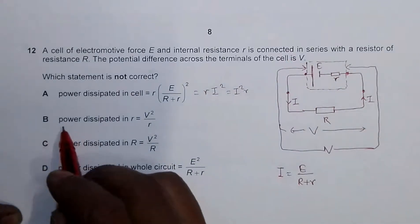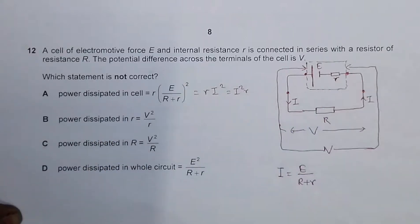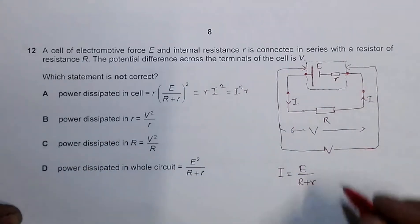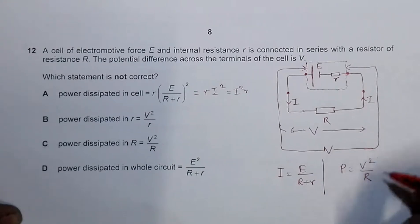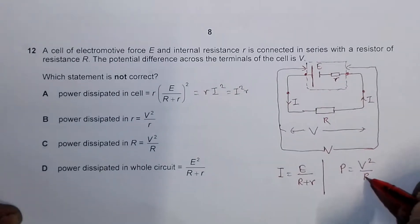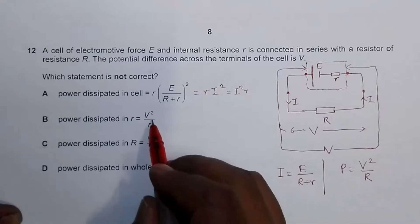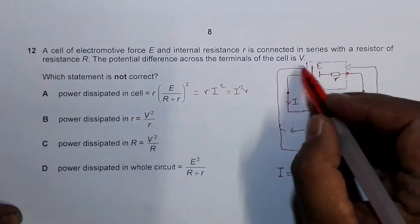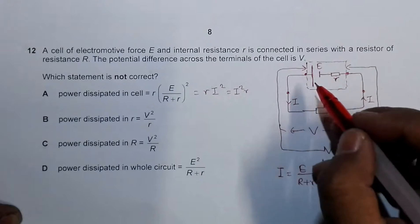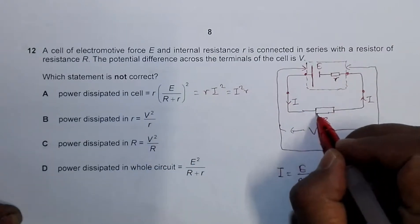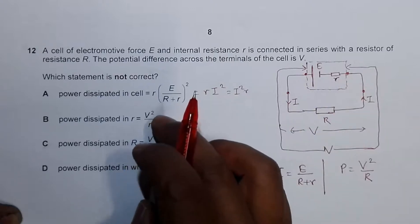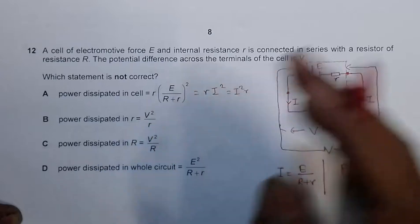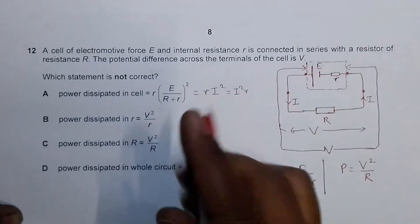Statement B says power dissipated in small r equals V² divided by small r. We have the expression power = V²/r, but V here is the potential difference across the external resistor — it is the PD outside, across the large resistance R, not across the internal resistance small r. So this statement is not correct: V belongs to large R, but the formula uses small r.